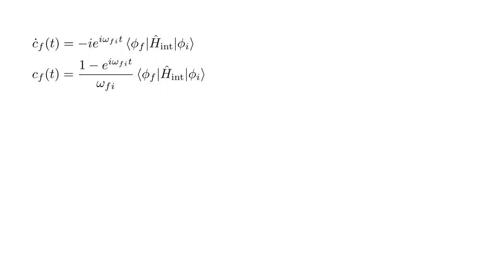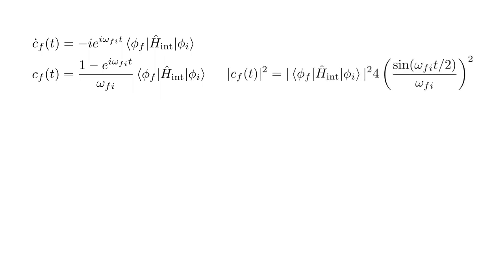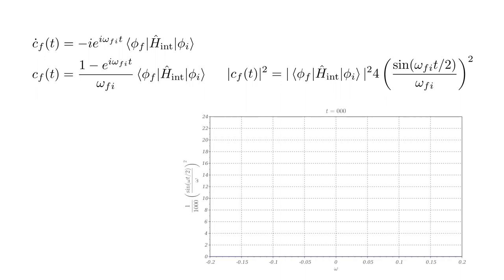Assuming the F i matrix element does not depend on time, the solution corresponding to the initial value C f of 0 equals 0, is 1 minus e to the i omega F i T over omega F i, times the F i matrix element. This is the first-order correction to our solution. The magnitude squared of this coefficient represents the probability that the system is in state F after time T. With a little algebra, it can be put in the form: magnitude squared of the F i matrix element, times 4, times the square of sine of omega F i T over 2, over omega F i. Let's plot the sine squared factor as a function of omega F i for various T values, starting with T equals 0. Note that in the graph labels, to reduce clutter, we drop the F i subscript and simply write omega.